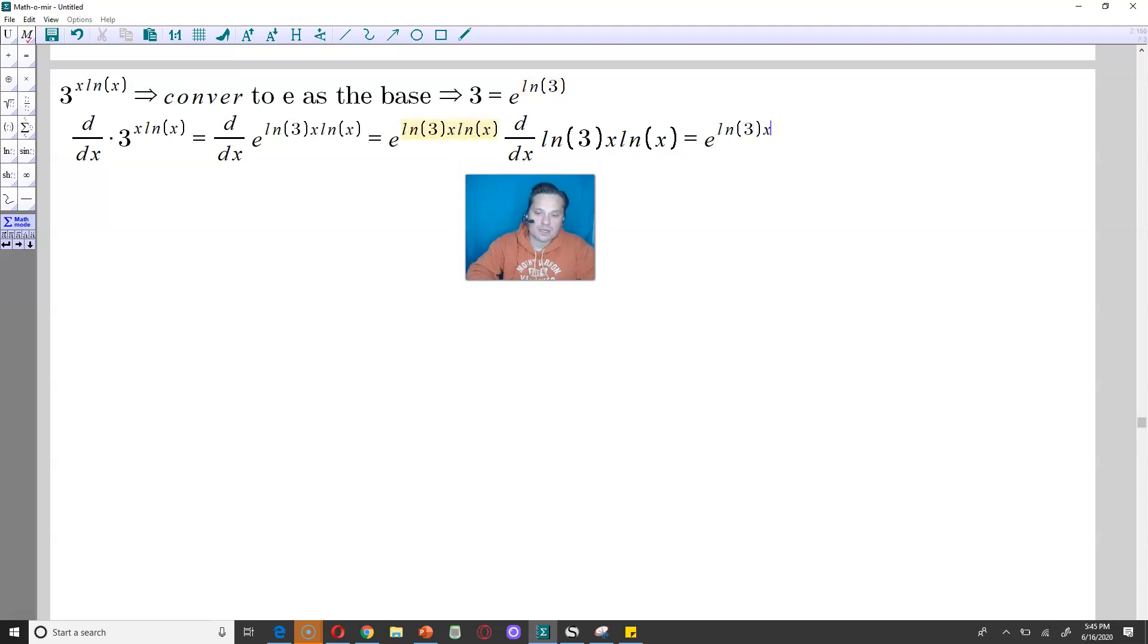e to the ln of 3 x ln of x and then ln of 3. Continue here. And then what I have left, essentially, is the derivative as follows: d dx of x ln x. So it's x times ln x.